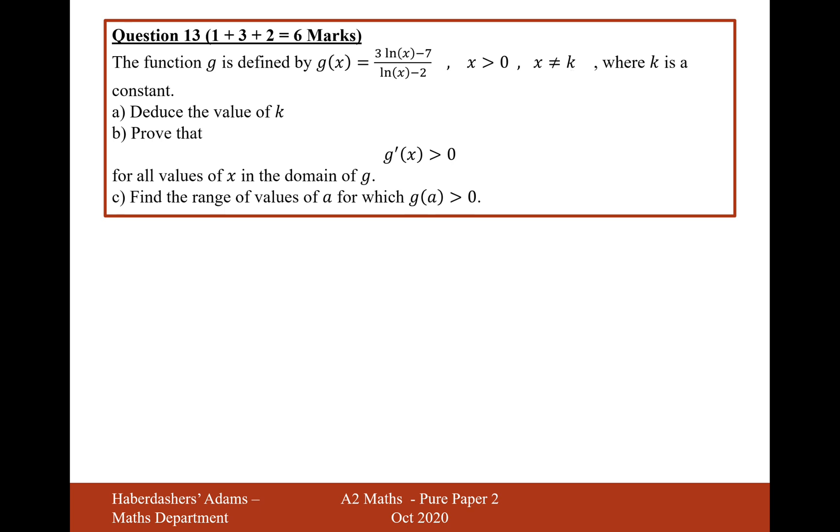Deduce the value of k. So k probably refers to this value on the bottom of the denominator that x can't equal because otherwise it will make the denominator equal 0. So ln(x) minus 2 will equal 0 for the value k. Let's move the 2 onto the other side and we'll get ln(x) equals 2. So therefore now e both sides, cancel out the ln, and you get e squared. Therefore k is equal to e squared, because that is the value of x that will make the denominator equal 0.